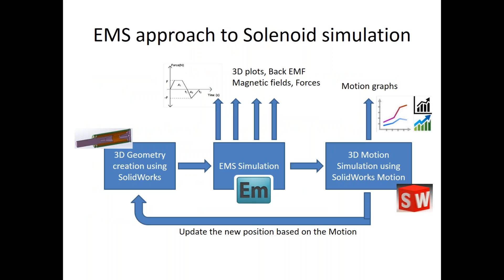Let's look at EMS's approach to solenoid simulation. The first step involves creating the geometry in 3D CAD like SOLIDWORKS. Once the geometry is ready, EMS studies the magnetic field due to the excitation of a coil, computes the resulting force, and transfers that force to SOLIDWORKS Motion, which handles kinematics and dynamics. Being integrated inside SOLIDWORKS CAD, EMS works seamlessly with the geometry and the motion component of SOLIDWORKS.